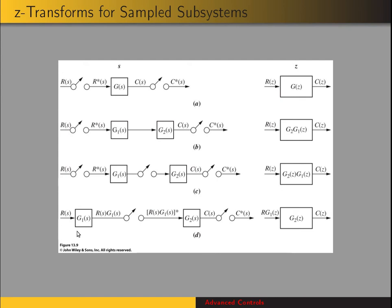One last scenario: we have a continuous input to G1, giving us output R times G1, which is sampled and is the input to G2, and that has sampled output. If we just look at G2, we have sampled input and sampled output, so we get G2 of Z and C of Z. We want to find the Z-transform of this sample data, which is just the Z-transform of the product R and G1. So the Z-transform of R of S times G1 of S is the input to subsystem G2 of Z.